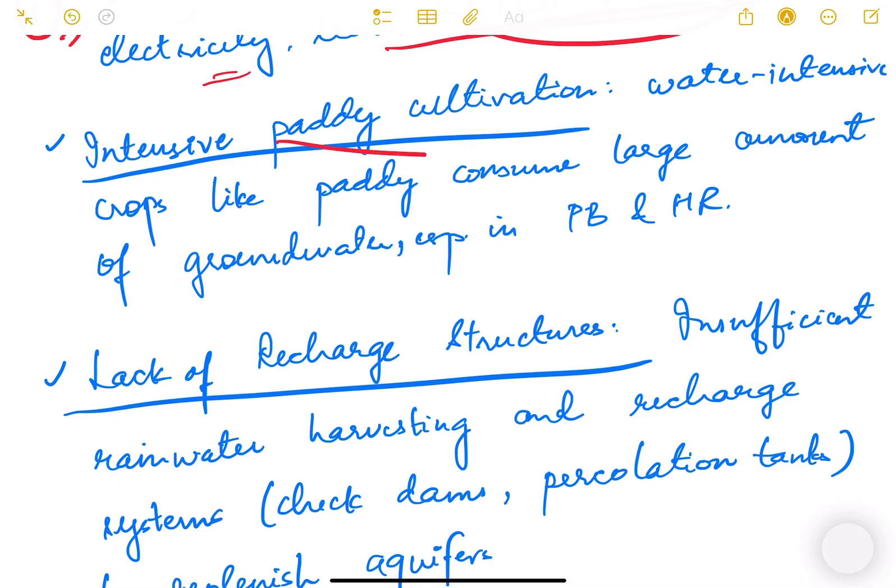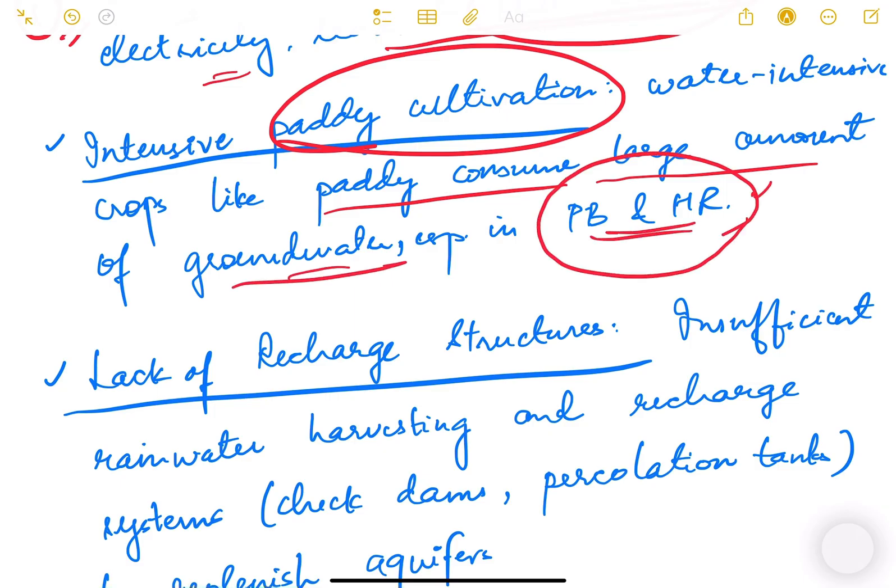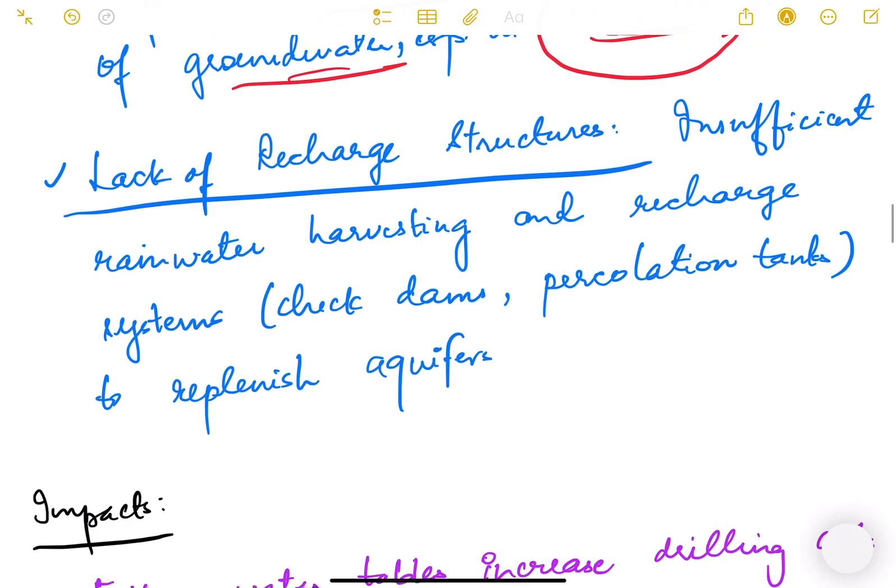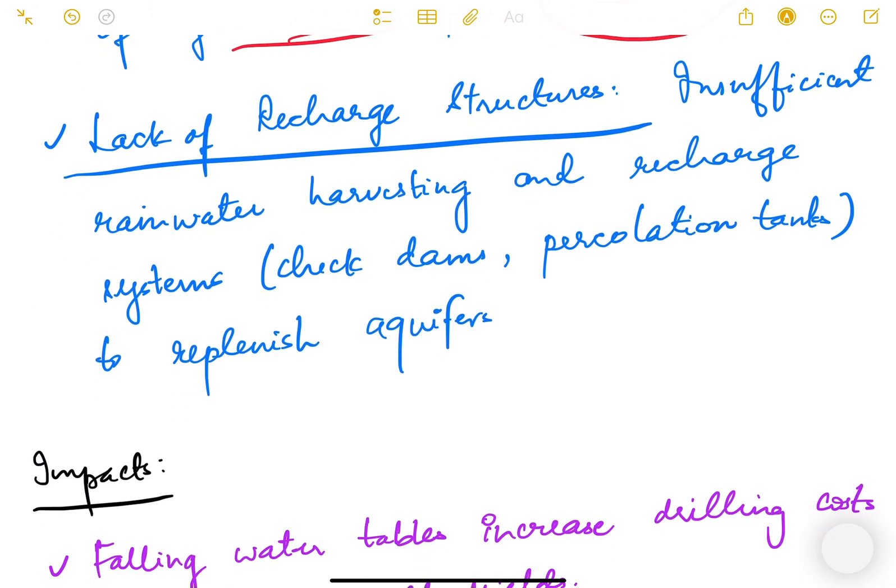The next one is intensive paddy cultivation. We have water-intensive crops like paddy which consume large amounts of groundwater, especially in Punjab and Haryana. There is also a lack of recharge structures.